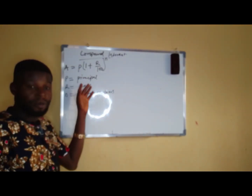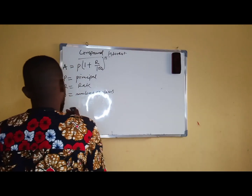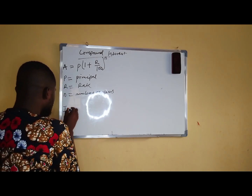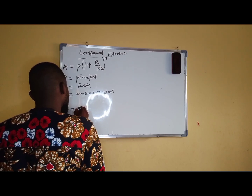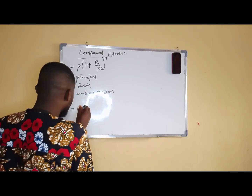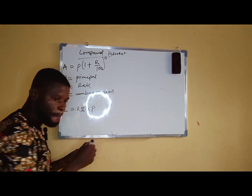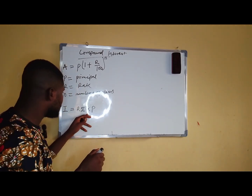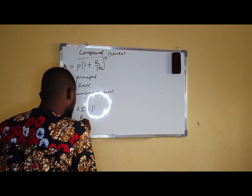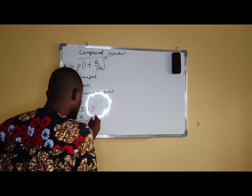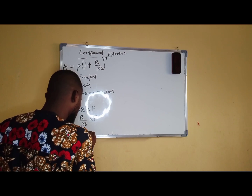Now, how did this formula come into existence? We know that interest is equal to R percentage multiplied by P. And this is equal to R all over 100 multiplied by P, which is the same thing as PR all over 100.